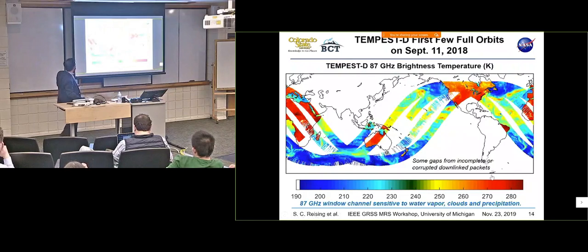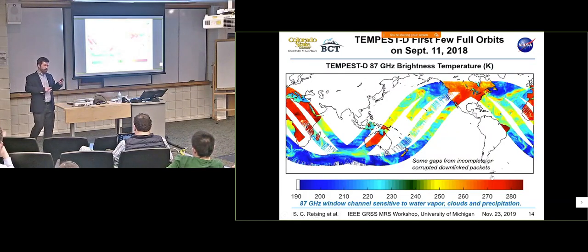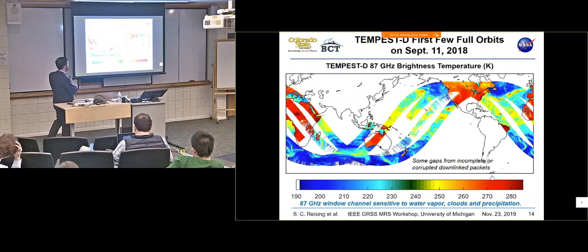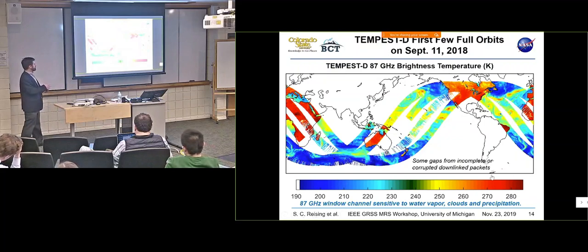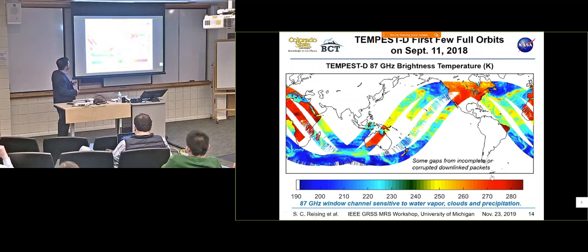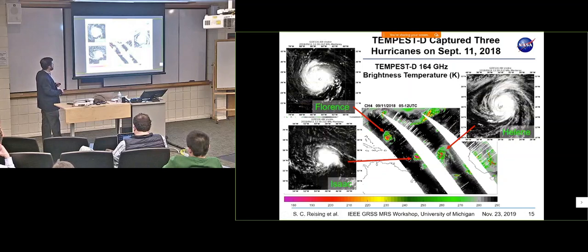After we got some ground communications hitches worked out because they were just starting to support UHF communications, we got our first data, first light on September 11th of last year. And if you look over in the Atlantic sector here around the areas that Chris Ruff talked about, around 20 to 30 degrees north, we captured three hurricanes in that first data set. We were very fortunate to get that. These are the visible, the black and white images are the geostationary visible images. And the color images are 164 gigahertz.